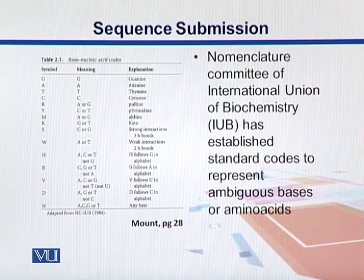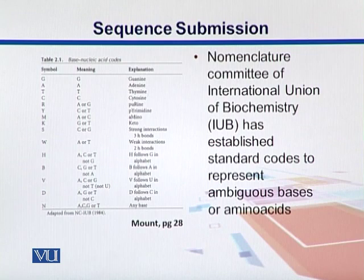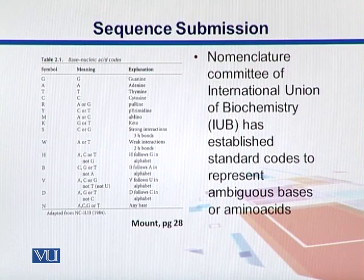For example, G, A, T, and C represent guanine, adenine, thymine, and cytosine. R means it can be either A or G — derived from purines. Y stands for pyrimidine, which can be either C or T.